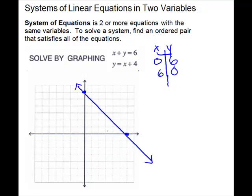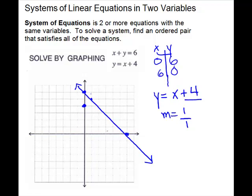Now I'm going to graph the other line on the same grid. So y equals x plus 4. I'm going to use slope and one point because it is in slope-intercept form. I can read off my slope, which is 1 — the coefficient of x — and my y-intercept is 4. First you plot your y-intercept at 4 on the y-axis. Then I will use my slope to find another point: from the intercept, go up 1 and over 1. I'll do it again to draw a good line, then draw my line.